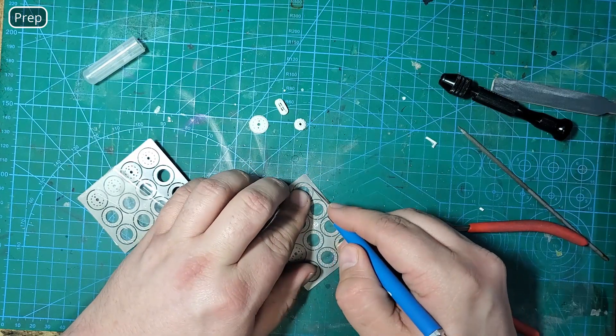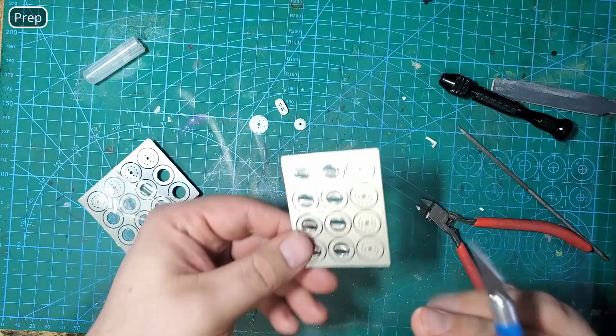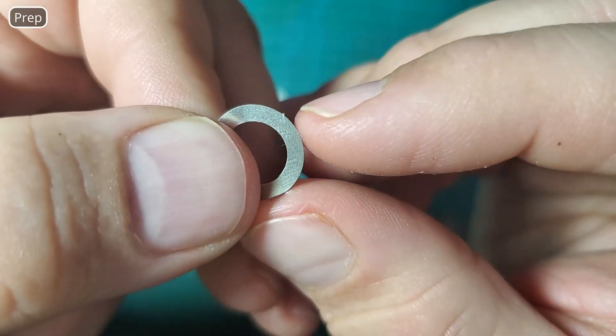We're going to take our hobby knife and cut these off of the fret. They're connected by three little tabs so we're just going to cut them and then we're going to file these down with our flat metal file.